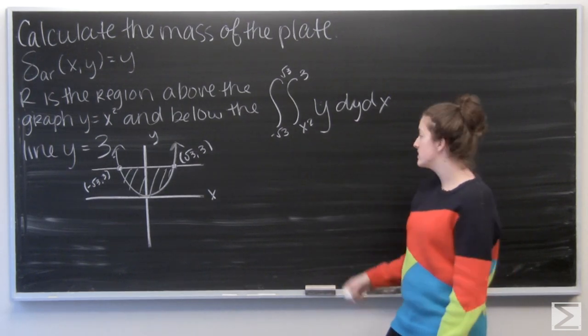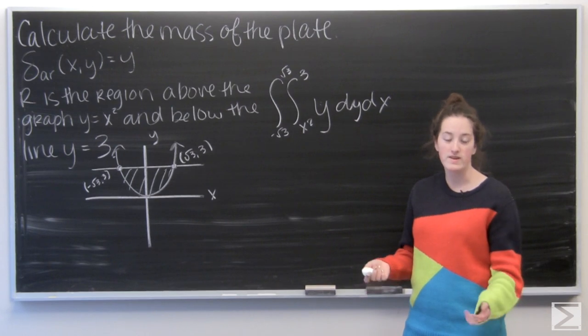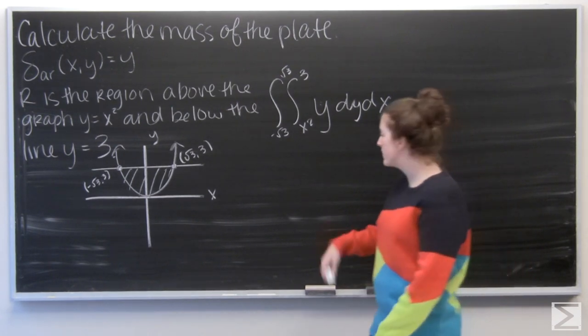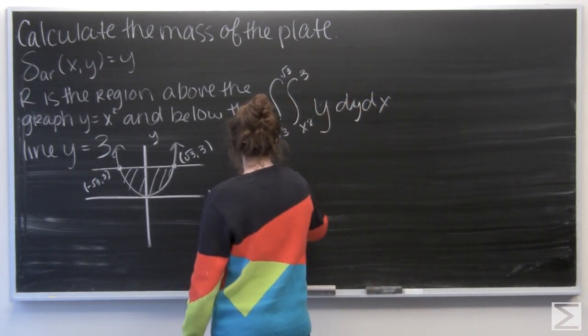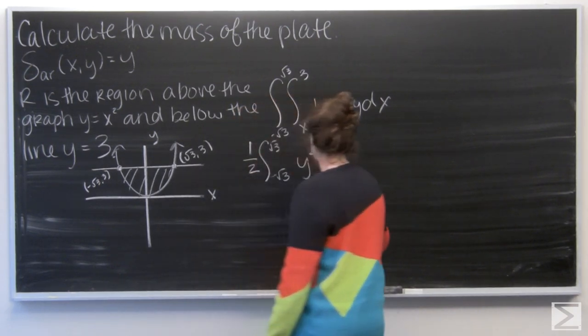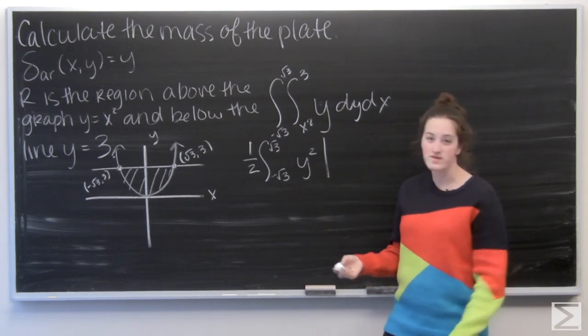Let's go ahead and start integrating. So the integral of y with respect to y is going to be 1 half y squared. I'm going to go ahead and pull the 1 half outside of the integral just so I don't have to deal with it until later.